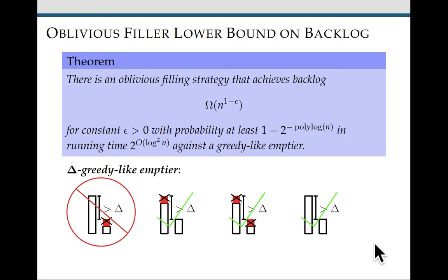And greedy like emptiers are actually really important. For instance, a greedy emptier, which is zero greedy like, is the emptier we used in our upper bound proof on the previous slide. And just a lot of reasonable emptiers are greedy like. So it's pretty cool that we're able to get a lower bound against this class of emptiers.